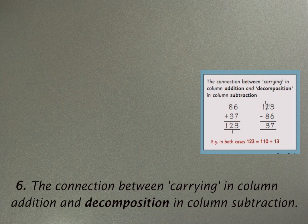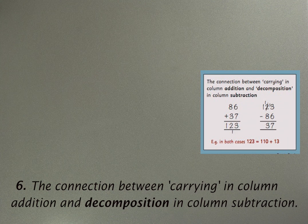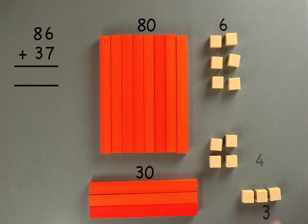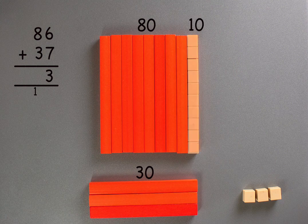The final pre-skill that I'm going to be looking at in this video is the connection between carrying, when we work in columns, and decomposition. Take a look at this example, where in preparation for doing a complicated subtraction, I'm first doing the related addition, so that pupils can see for themselves that the action of carrying a ten, combining ten units to make a ten and putting it into the next column,